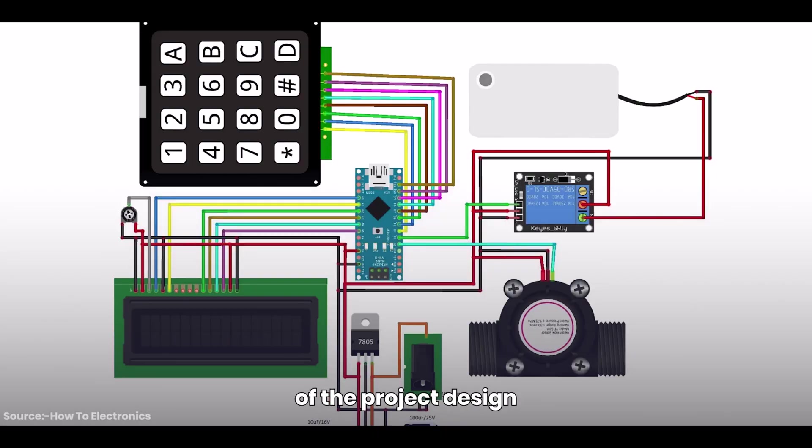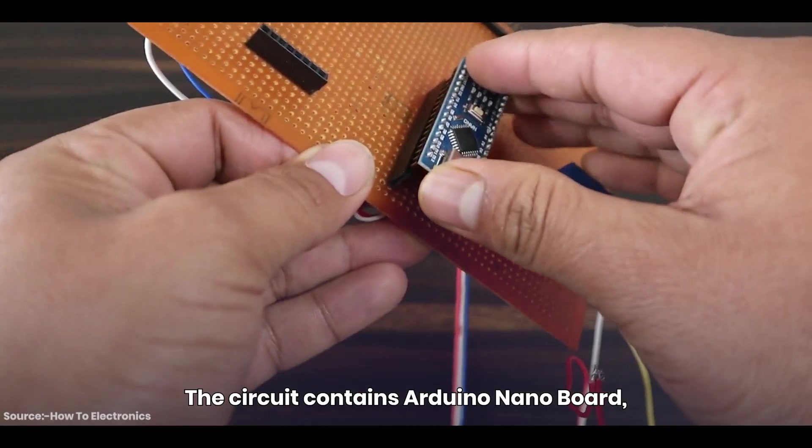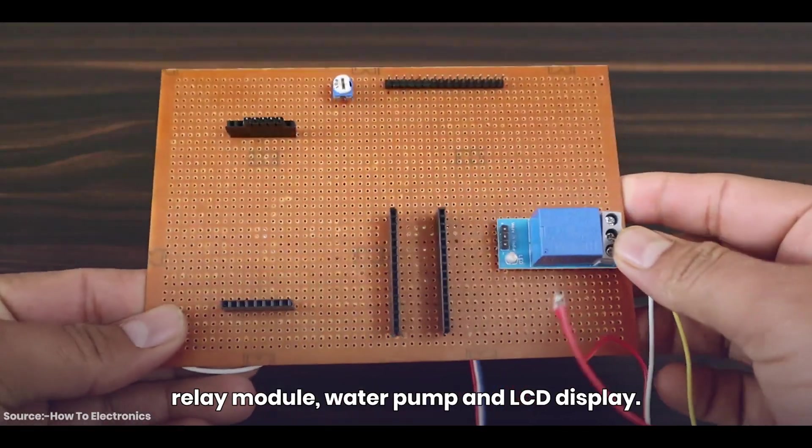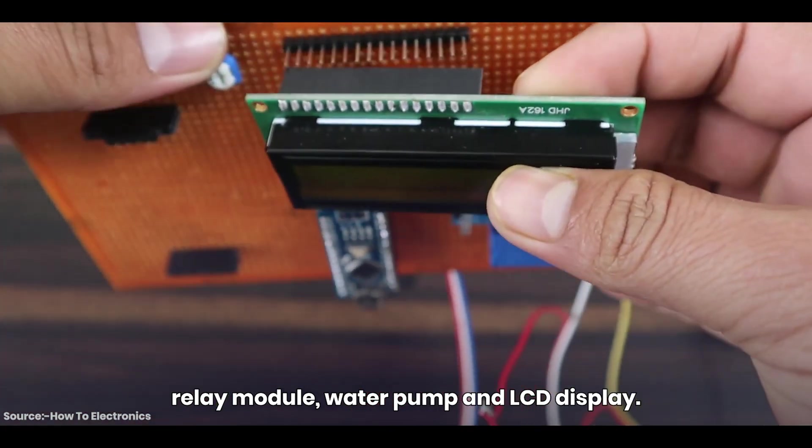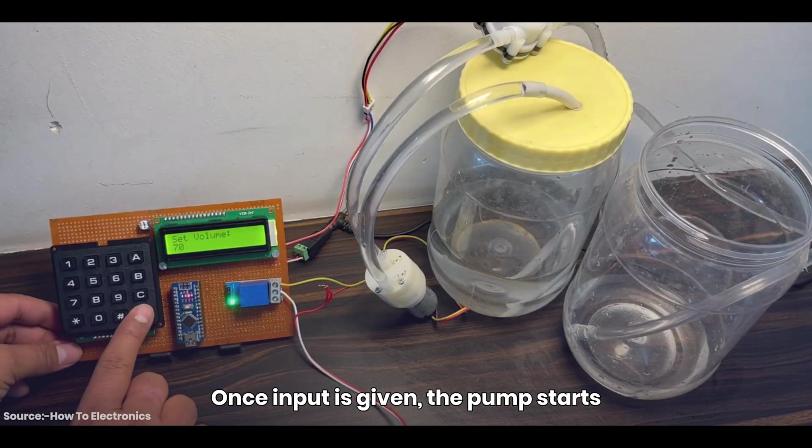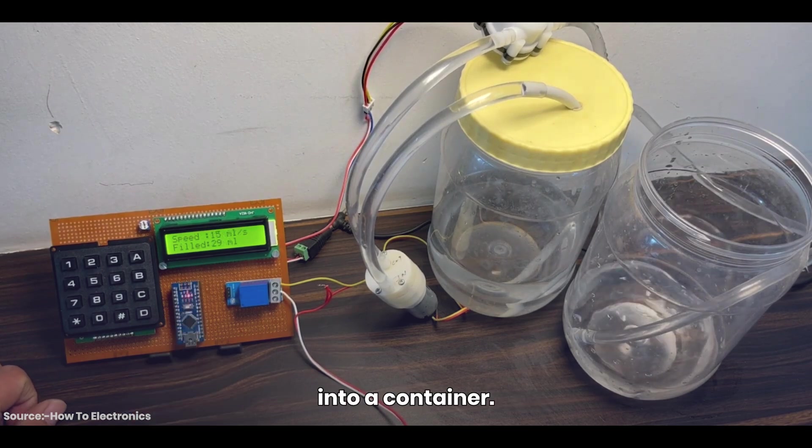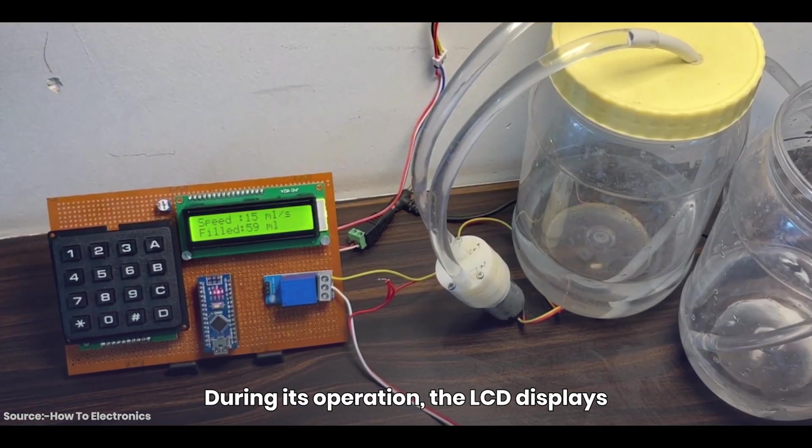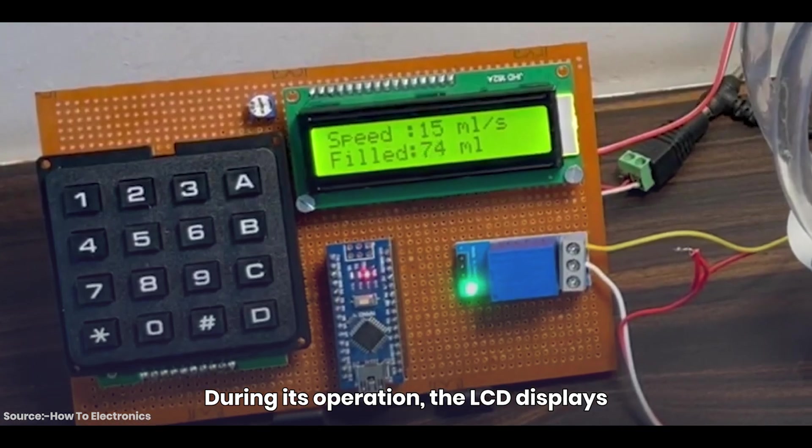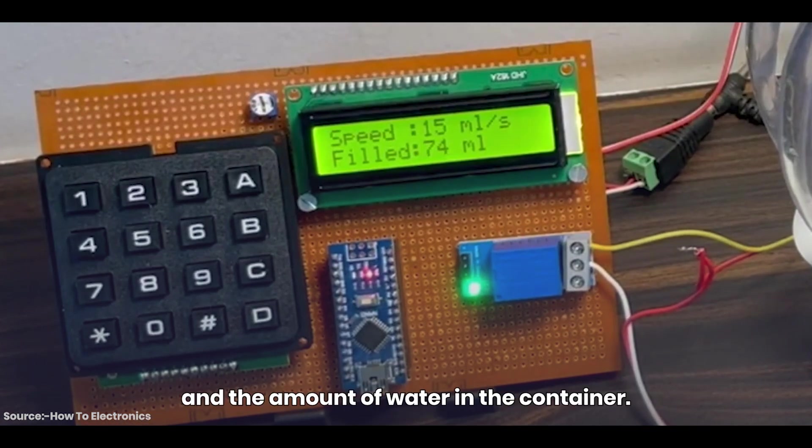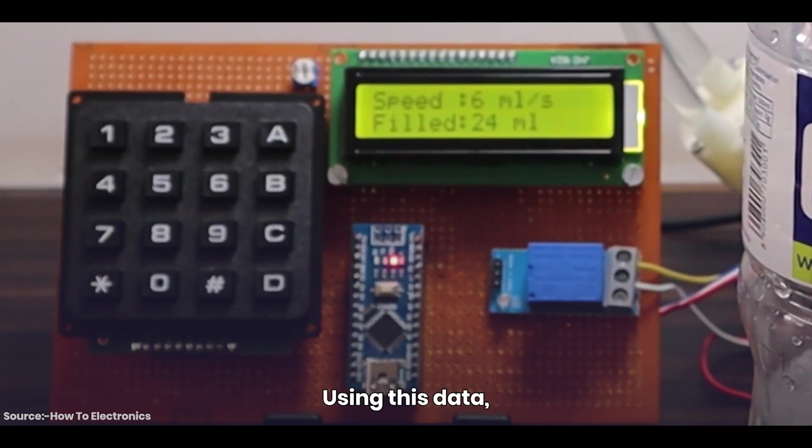This is the schematic of the project designed using the Fritzing software. The circuit contains Arduino Nano board, water flow sensor, relay module, water pump and LCD display. Once input is given, the pump starts working and transfers the precise liquid amount into a container. During its operation, the LCD displays the speed of water flow and the amount of water in the container. Using this data, it becomes easier to monitor the operation.